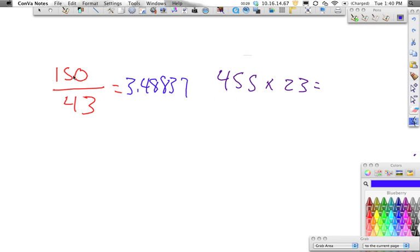But what we have to do is we have to look. Now in 150, we have 1, 2 sig figs. Okay, that 0 doesn't count because it's a trailing 0 and there's no decimal.